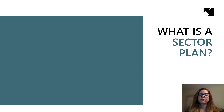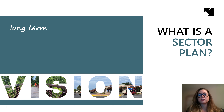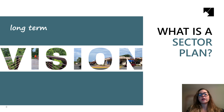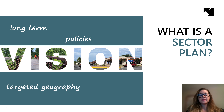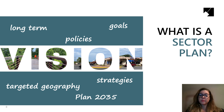A sector plan is a public policy document developed with input from the community, stakeholders, elected officials, and other interested parties to create a long-term vision for a specific area of Prince George's County. A sector plan contains the county's policies for growth and preservation for a specific targeted area, as well as strategies that, if implemented, could achieve the plan's vision over the next 20 to 25 years, as well as advance the goals of Plan 2035.